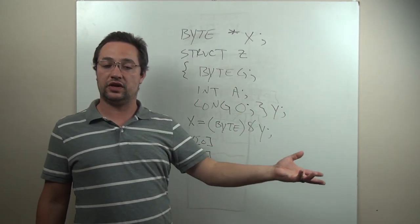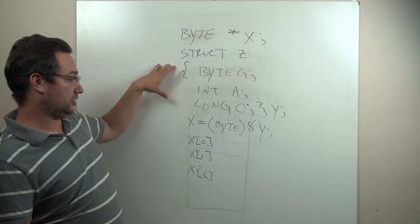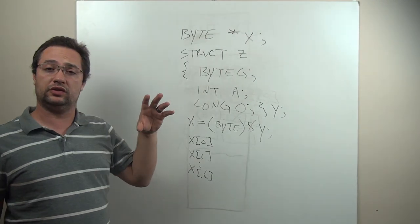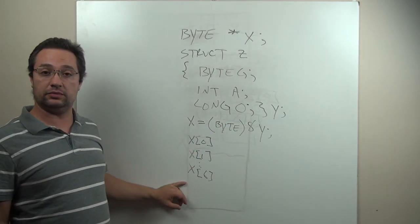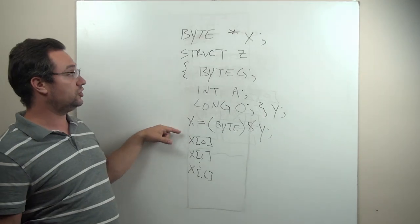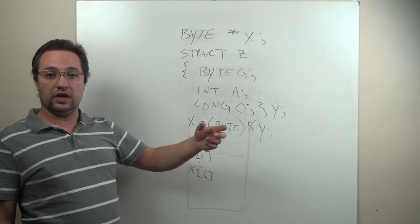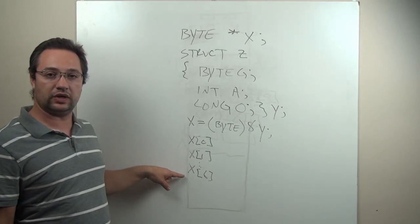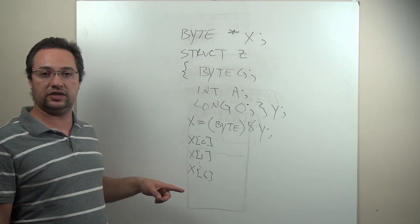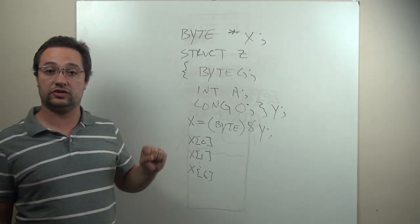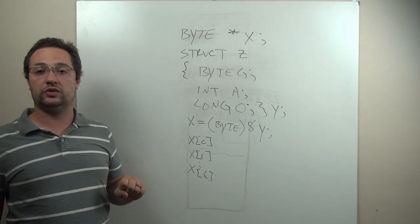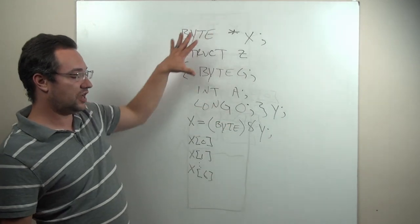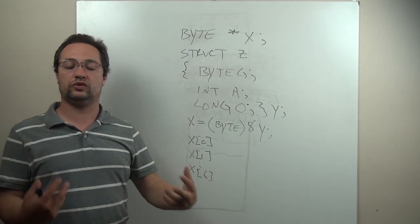On the receiving end, all you have to do is declare the same struct, generate a pointer to it, typecast it to a byte. Then instead of reading data out, you put the data back into x[0], x[1], x[2]... through x[6]. When you start to access the data in the struct, it's already put back and reassembled in exactly the same way it was found on the other side. This type of operation makes pointers incredibly useful.